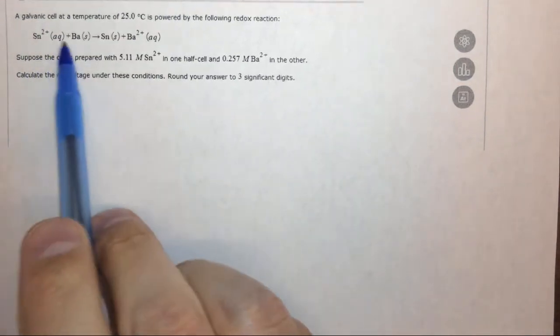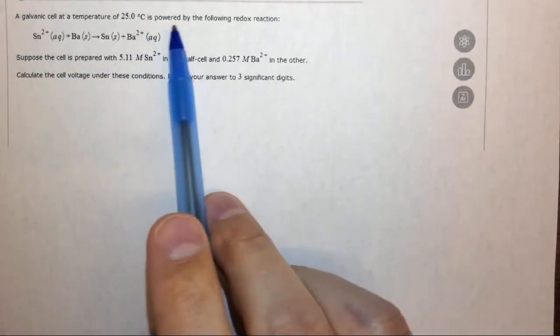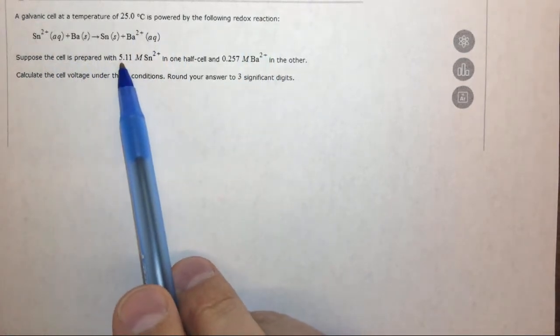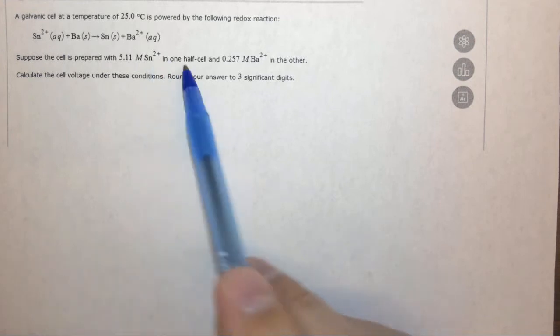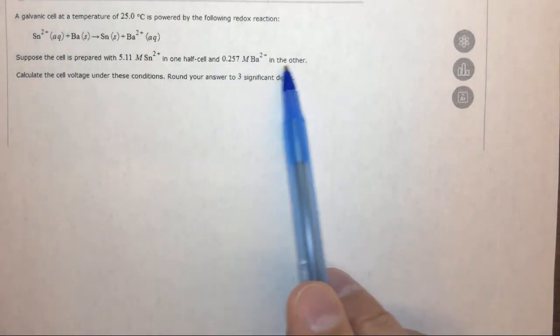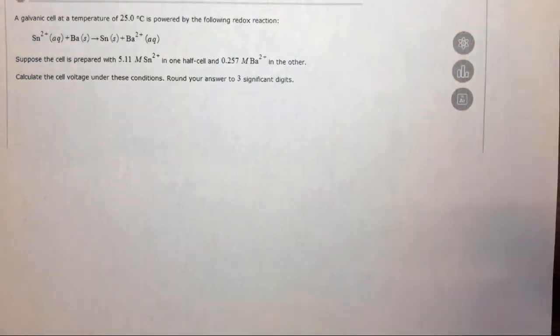In this question it says a galvanic cell at a temperature of 25 degrees C is powered by the following redox reaction. Suppose the cell is prepared with 5.11 molar tin 2 plus and 0.257 molar barium 2 plus. So basically we have some non-standard conditions.